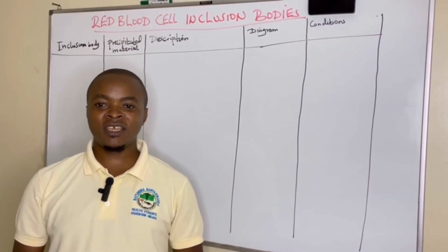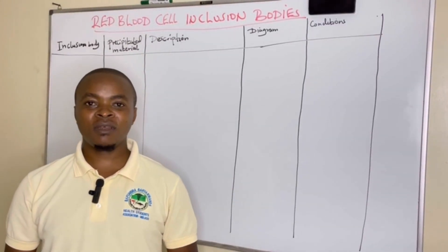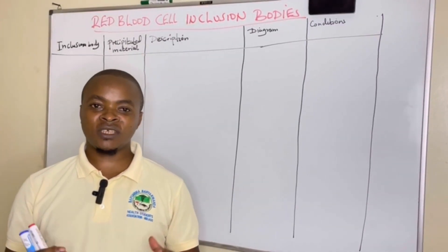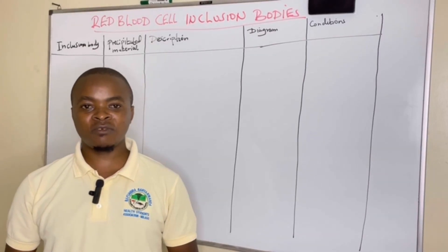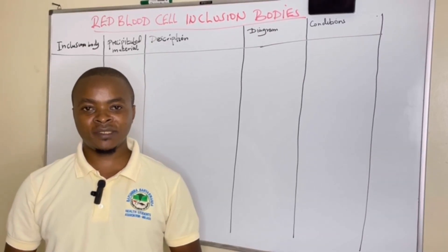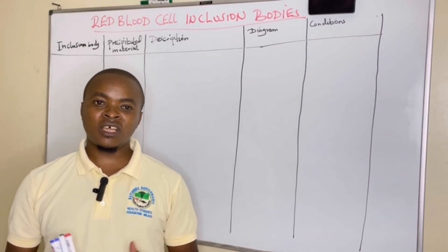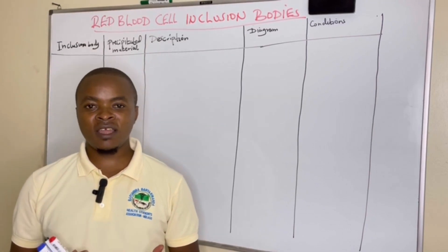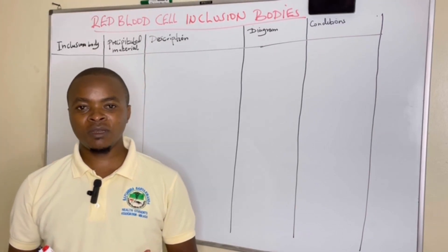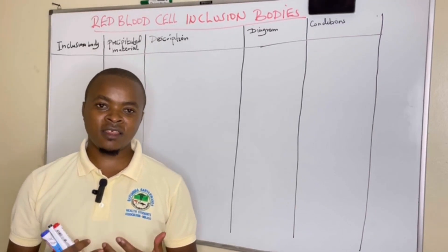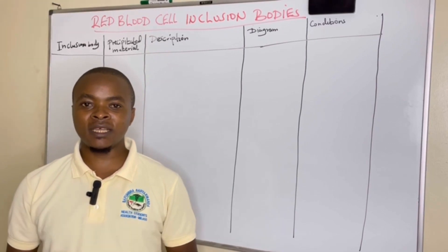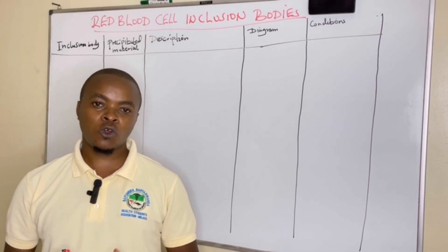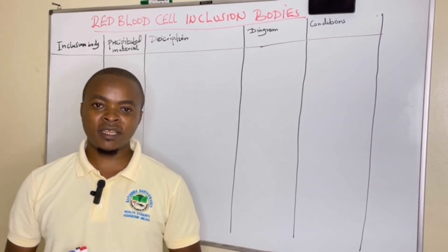Welcome to Medical Sciences by Naptani Mumza. In today's session we want to discuss red cell inclusion bodies — these are inclusion bodies that we see under a stained thin film, either with Romanowsky stains or supravital stains.